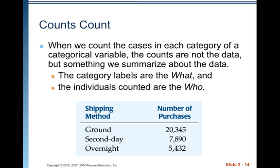So the actual data might be a list like ground, ground, ground, second day, ground, second day, overnight, ground, and so on — just a list of the actual shipping methods. You can see why that's hard for people to even absorb, so they summarize it into counts.